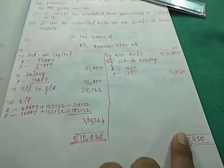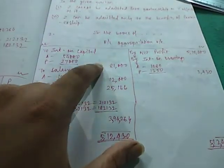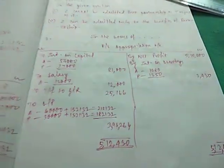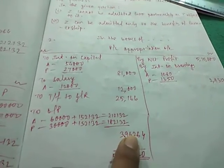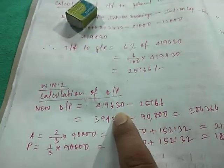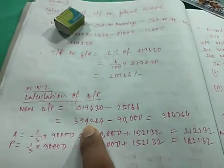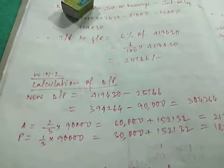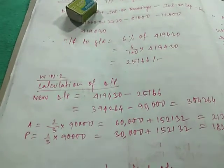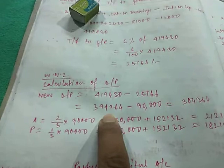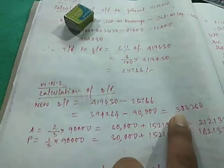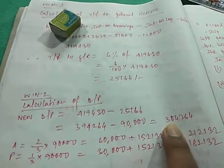Now after we write this 25,166, we need to calculate the actual DP. Now we will do the same process, 512,430. From this we will subtract 81,000, 12,000, and 25,166. After we subtract this 25,166 also, we will get this figure 394,264. From this, the division of profit was to be made. First 90,000 in the ratio of PSR, that is 2 is to 1, and the rest amount equally. So from this 394,264, first of all we will subtract 90,000 that provides us 304,264.